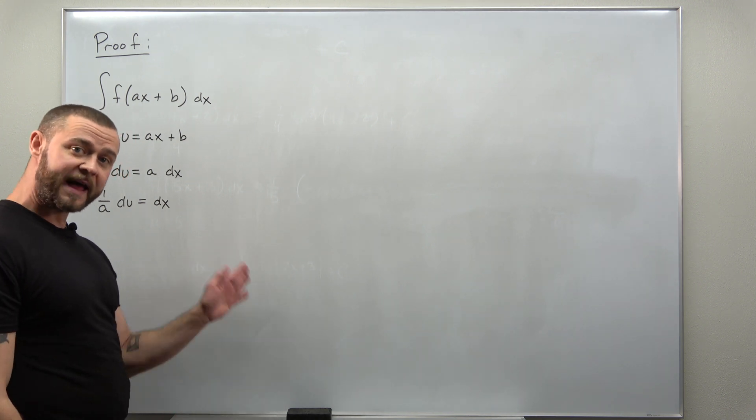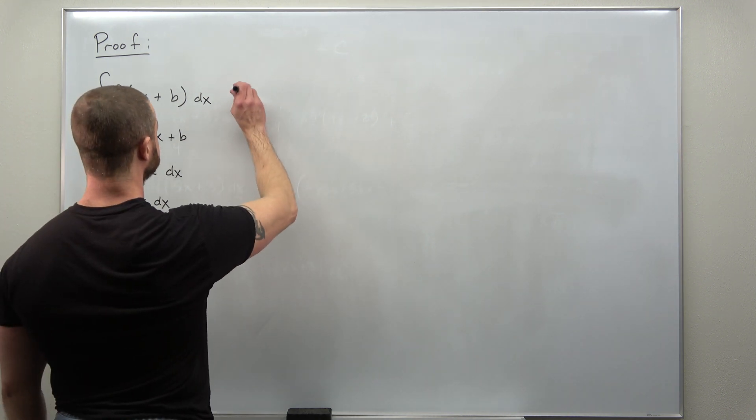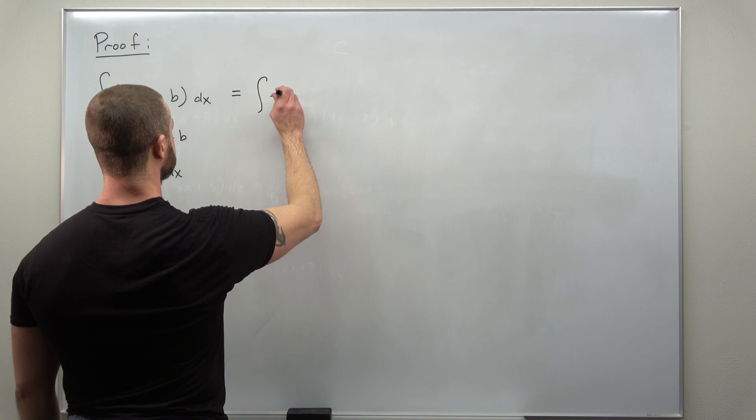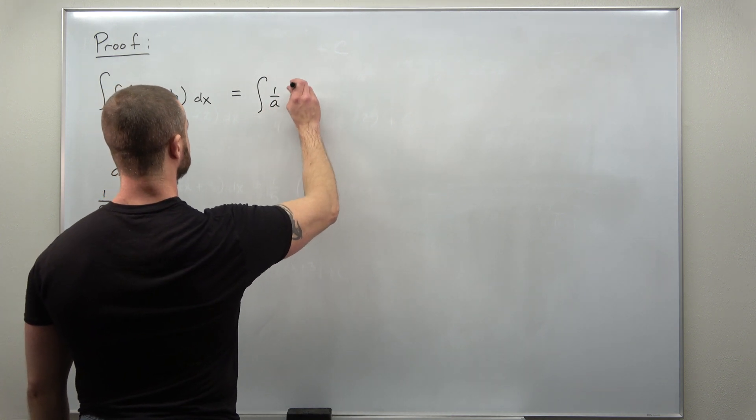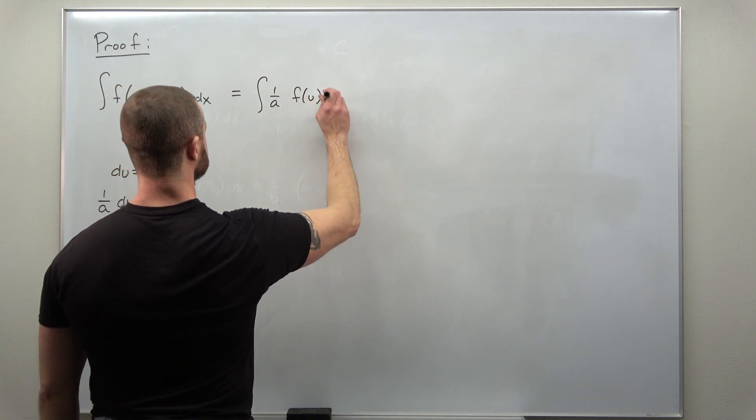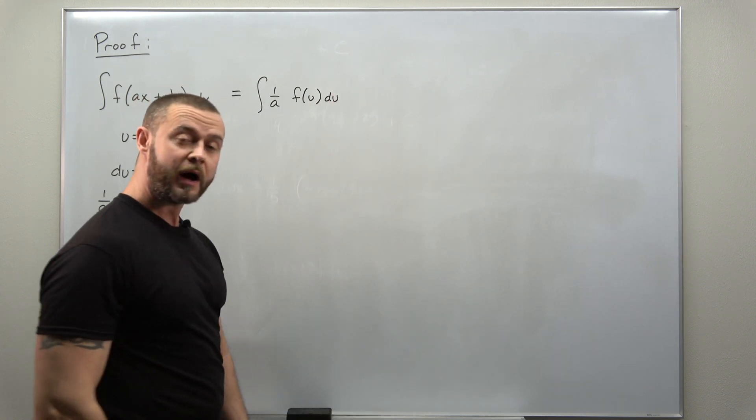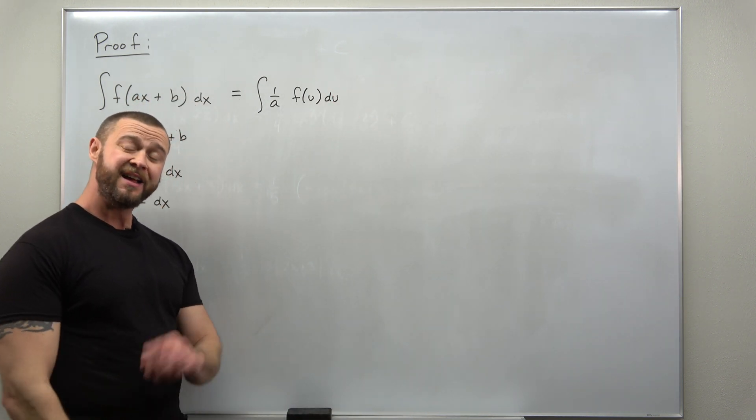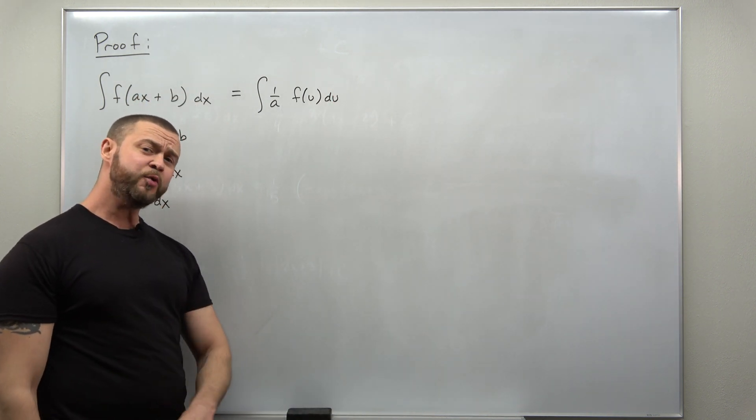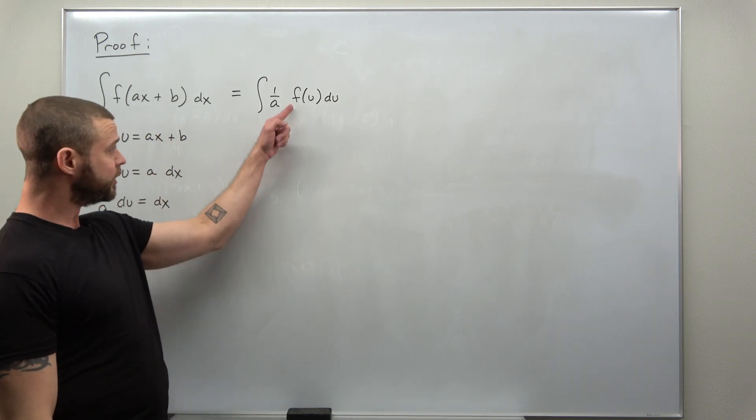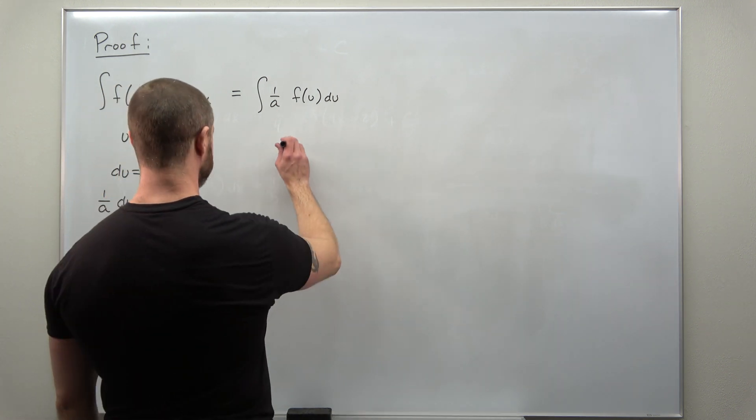And if we go ahead and convert from x's to u's, our integral converts to this. And remember, we are assuming that the function, little f, has a basic antiderivative.